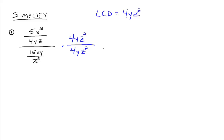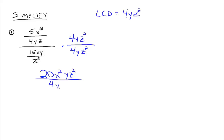Because that is a fancy way to write the number 1, so we're not really changing the value of this expression, just rewriting it in a different way. So we multiply 4yz squared times 5x squared over 4yz, and we get 20x squared yz squared over 4yz — because it's like 4yz squared over 1, so you're multiplying straight across.